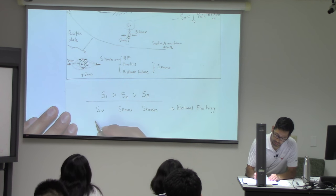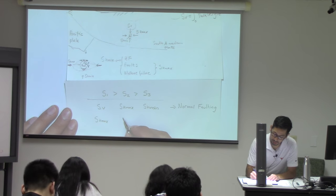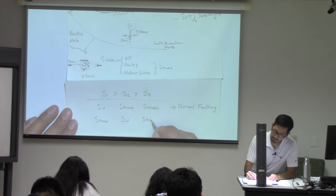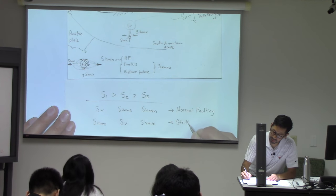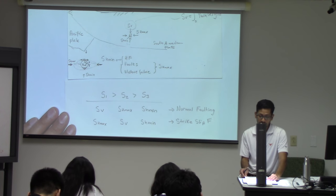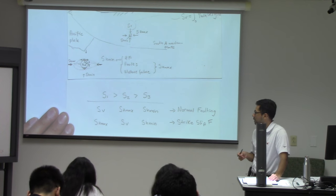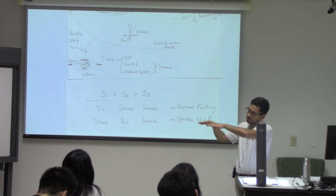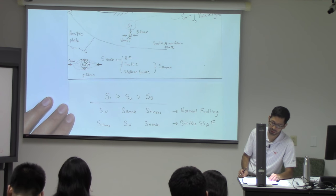The name 'normal faulting' is related to the type of shear faults or shear fractures that you're going to find in those basins — we'll see in detail later on why they are called like that. The second case is going to be one in which the maximum principal stress is horizontal, the intermediate principal stress is vertical, and the minimum principal stress is horizontal too — and this is a case of strike-slip faulting.